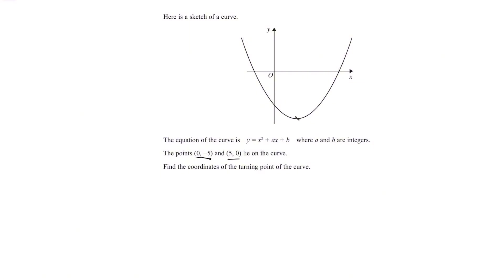The turning point is somewhere around here because it's where the graph changes direction. How do we find turning points of quadratics? Well, what we do is complete the square and then we can pretty quickly read off the answer. However, it's a bit of a problem trying to complete the square right now because we don't know what a and b are. So let's try and find a and b first.